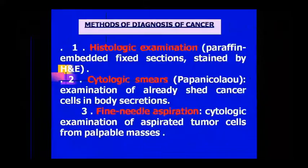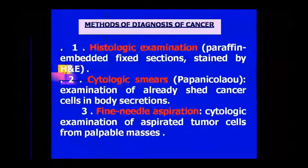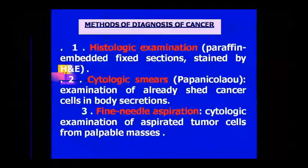How do we do pap smear? It is done for cancer of the cervix. Cancer cells shed during menstrual bleeding. We collect those cells, make a smear, stain it, and examine it under the microscope. We call this pap smear, also known as Papanicolaou examination. So these are two examinations: exfoliative cytology and FNAC.